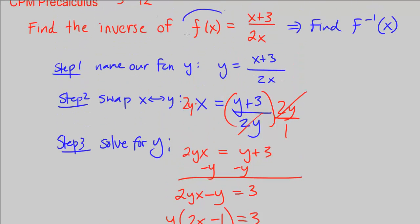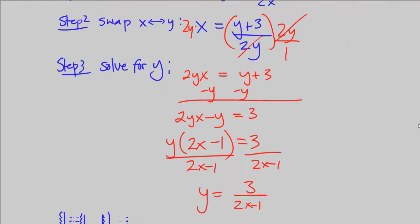And that means if our original function was f of x, our new one is going to be f to the negative 1, which is the inverse function of f. If it was g of x, we would name it g to the negative 1 of x, and so forth.